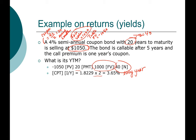However, since this bond is callable, when you buy this bond you may be concerned that the company will call the bond as soon as it becomes callable, and your actual return may be different from the yield to maturity. So let's look at the yield to call. Two things do not change: the price of the bond is still $1,050, and the size of the coupon payment remains $20 every six months.